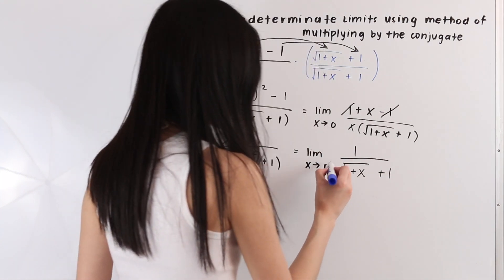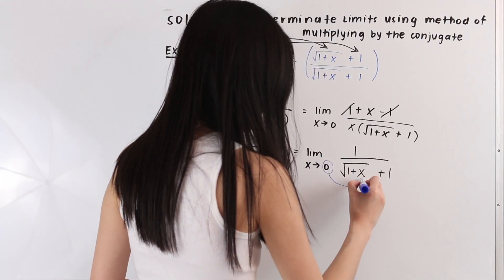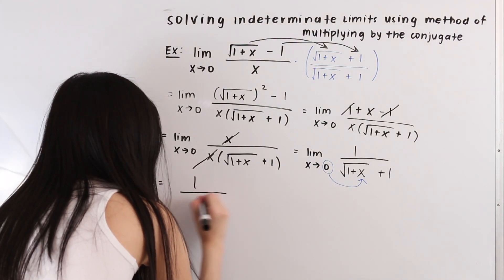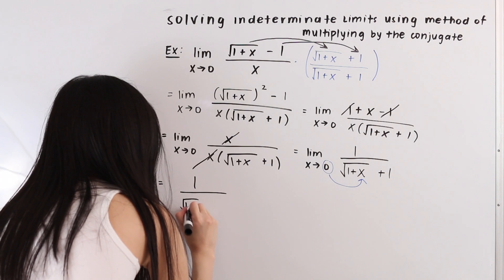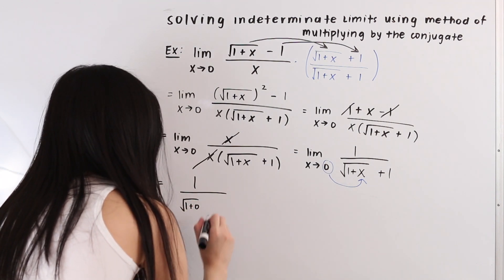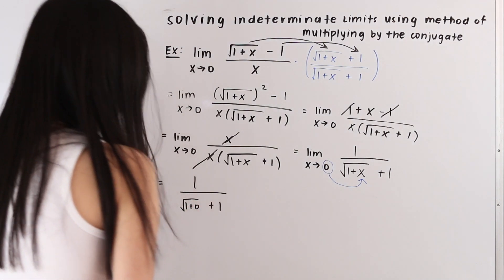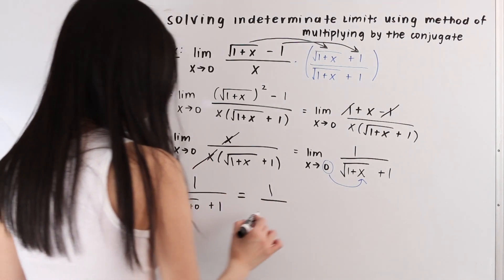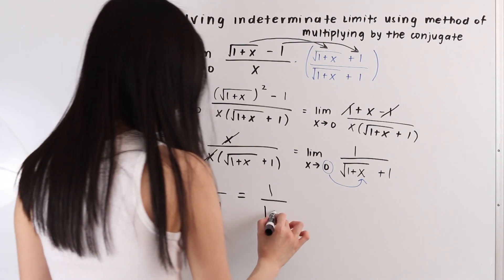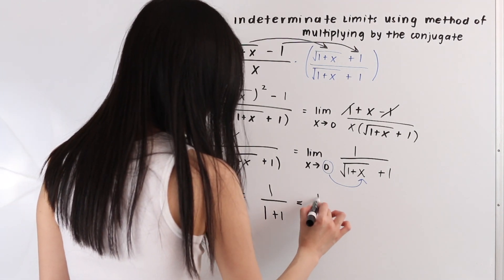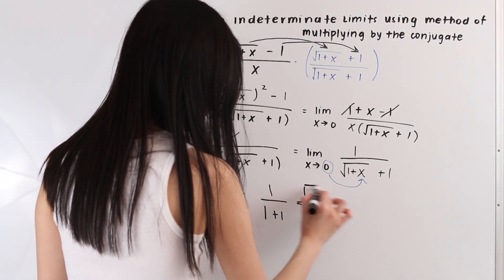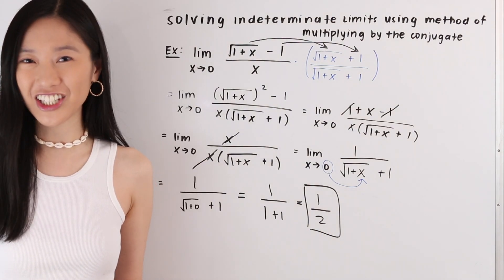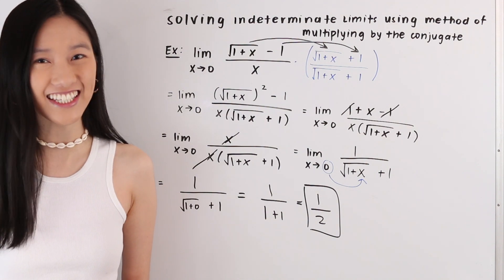From here we plug in x = 0, and we get 1 over the square root of 1 plus 0 plus 1. The square root of 1 is just 1, and then we have plus 1, so this simplifies to 1 over 2. And that is how you solve an indeterminate limit using the method of multiplying by the conjugate. Thank you so much for watching and I'll see you next time.